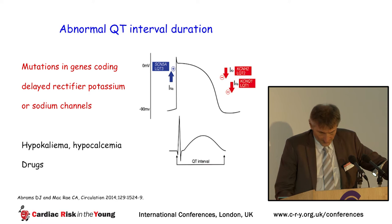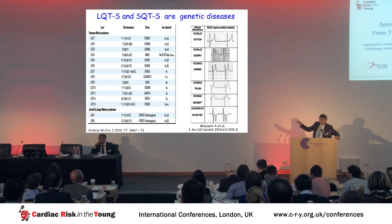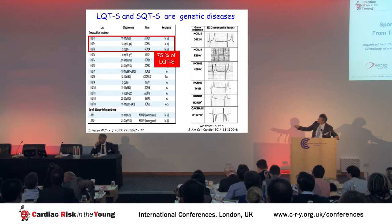There are many gene mutations associated with long or short QT duration. However, in more than 70% of cases, long QT duration is due to three mutations: long QT 1, long QT 2, and long QT 3.